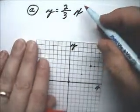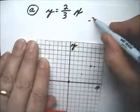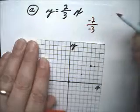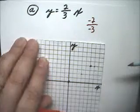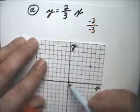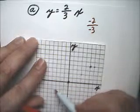Now if I wanted to, I could use minus 2 over minus 3 for the slope, because this is also equal to positive 2 thirds. So I could go down 2 and to the right 3.